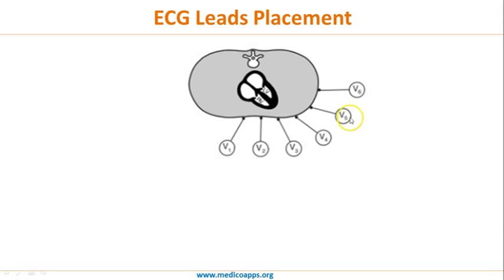Leads V5 and V6 record the electrical activity of the lateral part of the heart. So to summarize: V1-V2 records the septal part, V3-V4 the anterior part, and V5-V6 the lateral part. Notably, none of the chest leads actually record the posterior aspect of the heart, so posterior myocardial infarcts cannot be diagnosed using V1 to V6.